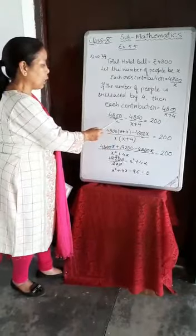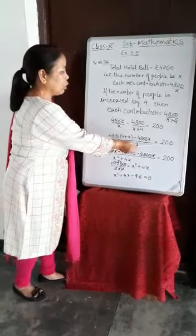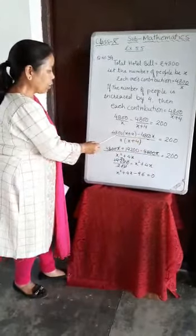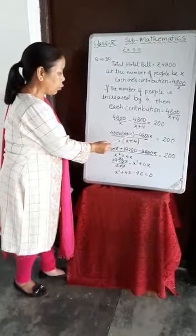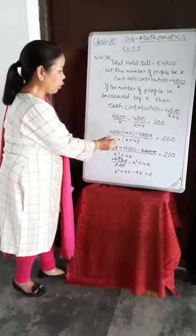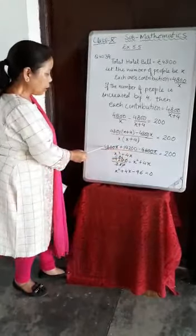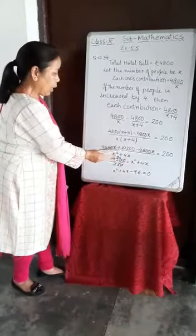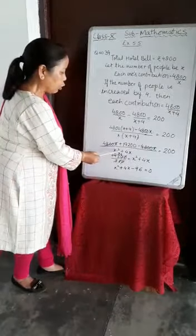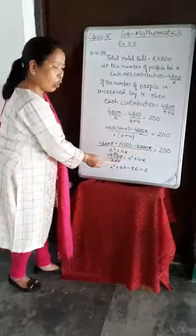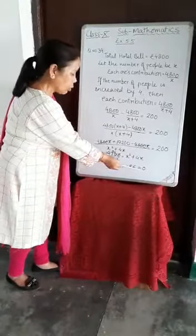We multiply 4800 by X plus 4, and X multiplied by 4800 equals 200. Opening the bracket: 4800 multiplied by X is 4800X, plus 4800 multiplied by 4 is 19200, minus 4800 multiplied by X is 4800X. Because one is plus and the other minus, these two 4800X terms cancel. We have 19200 equals 200, and taking X squared plus 4X to the other side by cross multiplication, the equation becomes X squared plus 4X minus 96 equals 0.